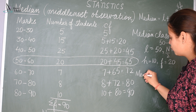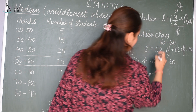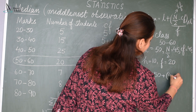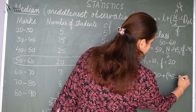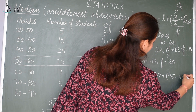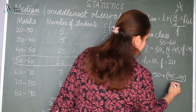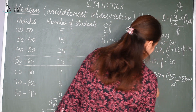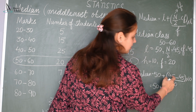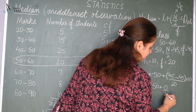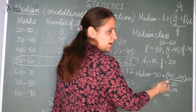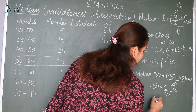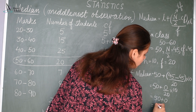Now we substitute the values. Median = L + ((N/2 − CF) / F) × H = 50 + ((45 − 45) / 20) × 10. The numerator becomes 0, and 0 divided by any number is 0. So this becomes 50 + 0 = 50. The median is 50.